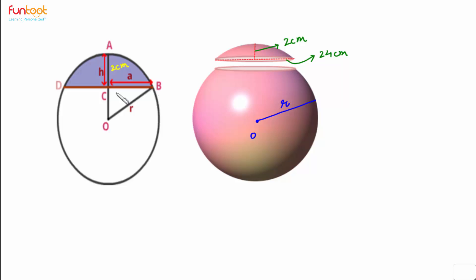We know that perpendicular from the center bisects the chord. DB is like the chord of the circle and it will get bisected at point C. So if DB is 24 centimeters, CB represented by length a will be 12 centimeters.